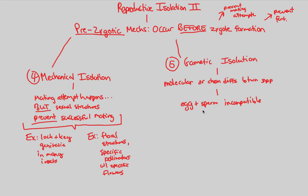Mechanical isolation, by contrast, is not about egg and sperm incompatibility — it's an incompatibility in terms of body parts; the lock doesn't fit the key. In gametic isolation, the body parts may be perfectly compatible, but what matters is that the egg and sperm specifically are incompatible. This incompatibility is what directly prevents fertilization, making gametic isolation a prezygotic reproductively isolating mechanism.